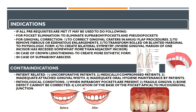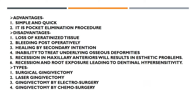Contraindications are patient-related and pathological. Patient-related include uncooperative or medically compromised patients, inadequate attached gingival width, and inadequate oral hygiene. Pathological contraindications include infrabony pockets — in that case flap or other resective/regenerative surgeries are done — fragile gingiva, bone defects that cannot be corrected, and when the base of the pocket is apical to the mucogingival junction.